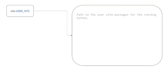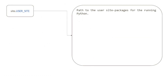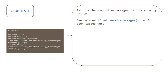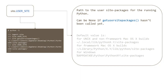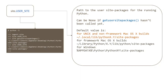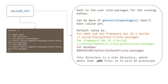The USER_SITE attribute shows the path to the user site-packages for the running Python. It can be None if getusersitepackages() hasn't been called yet, or if Python was called with the -S option. The default value differs for Unix, Mac, and Windows. This directory is a site directory, which means that .pth files in it will be processed. Example shown when Python is called without the -S option.